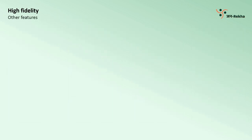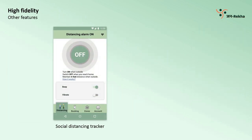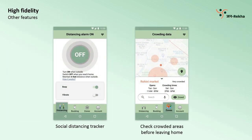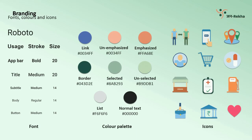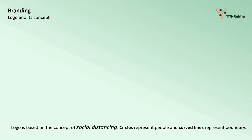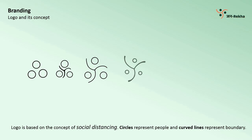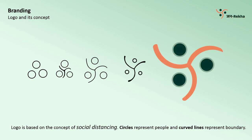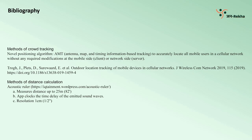Other features like social distance trackers and zone data can be accessed by tabs in the tab bar. The following fonts, colors, and icons were used for branding the app. The logo is based on the concept of social distancing. We started with a set of circles that represent people, and curved lines were introduced to represent the boundary between them — and here is the final logo. Thank you all and stay safe.